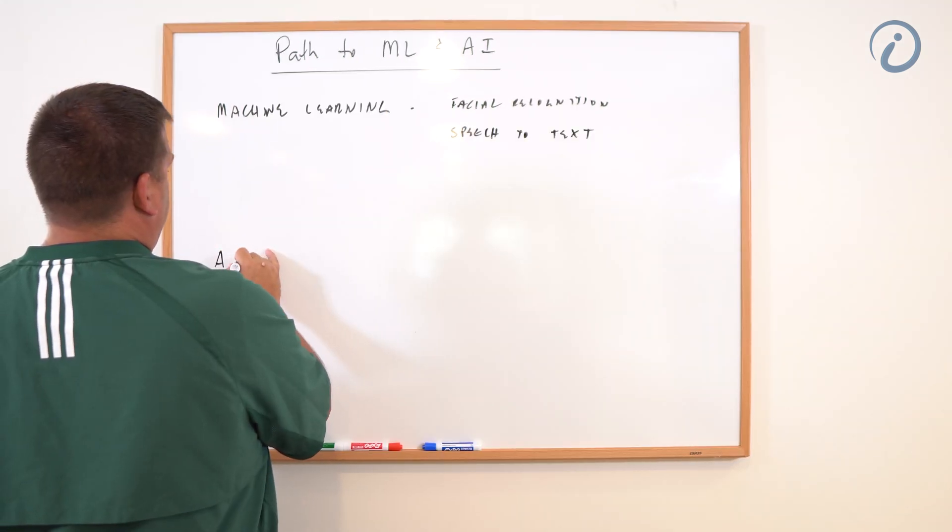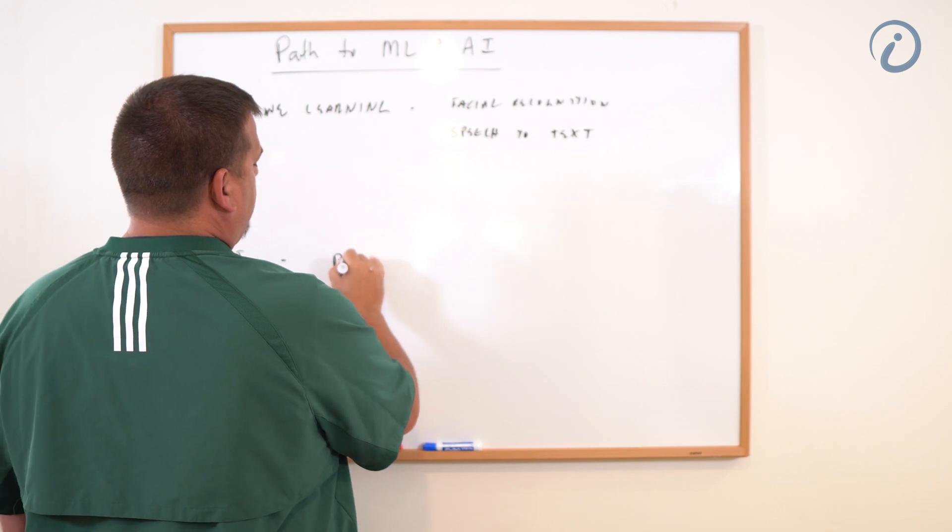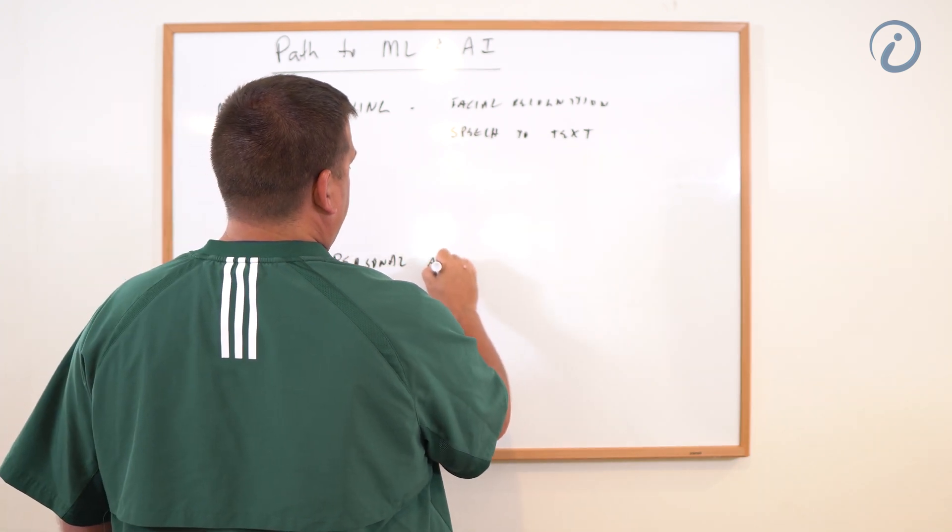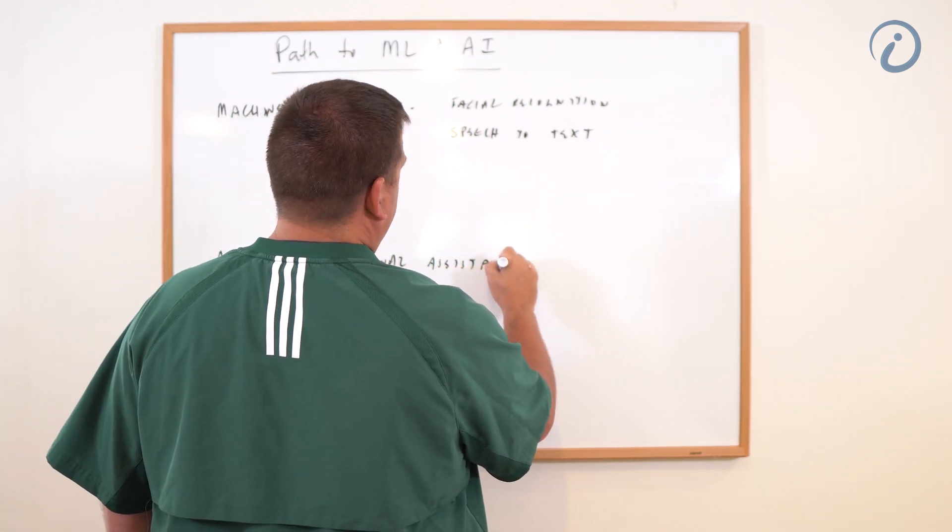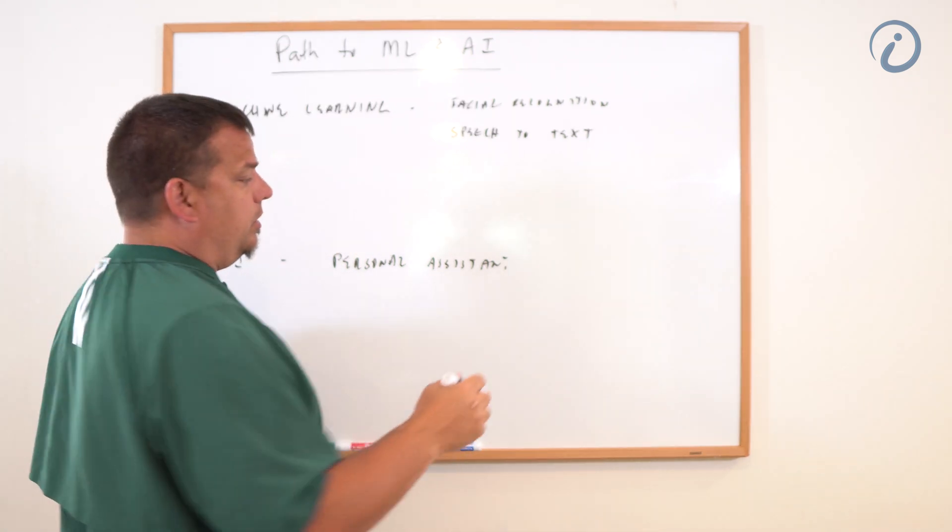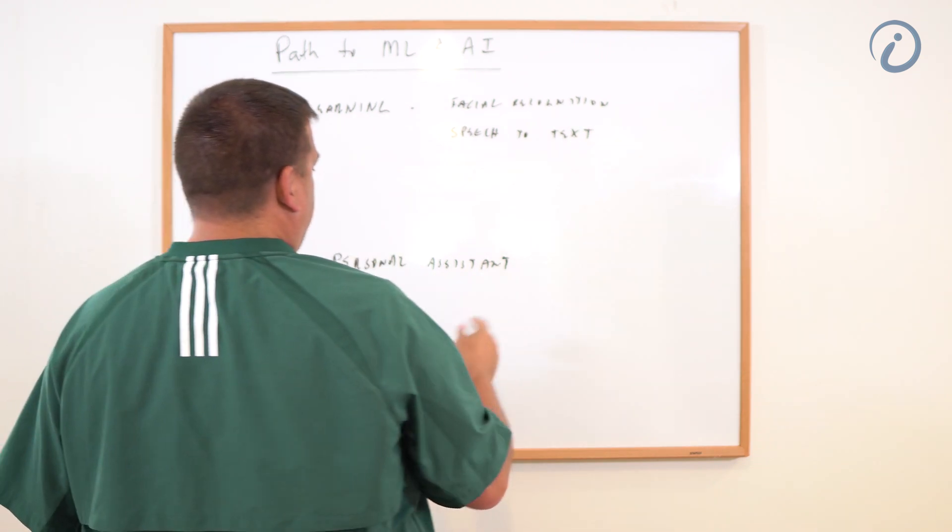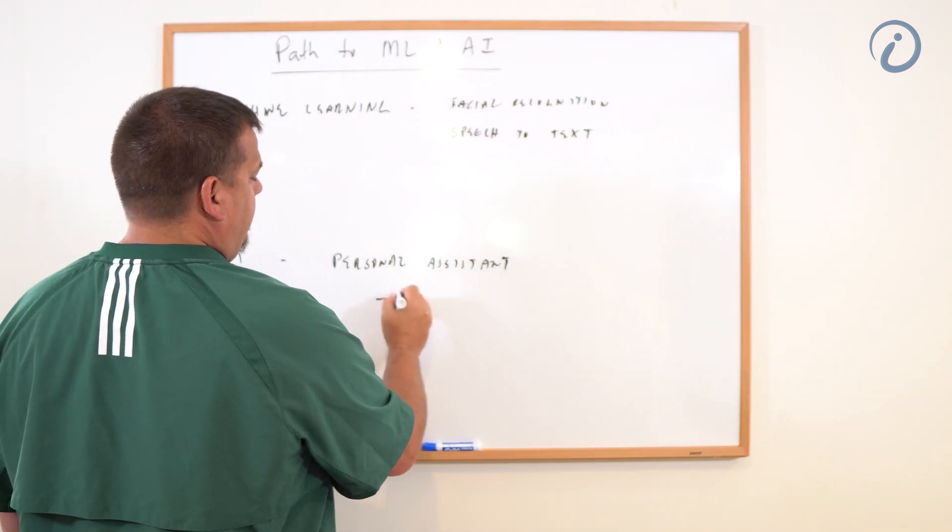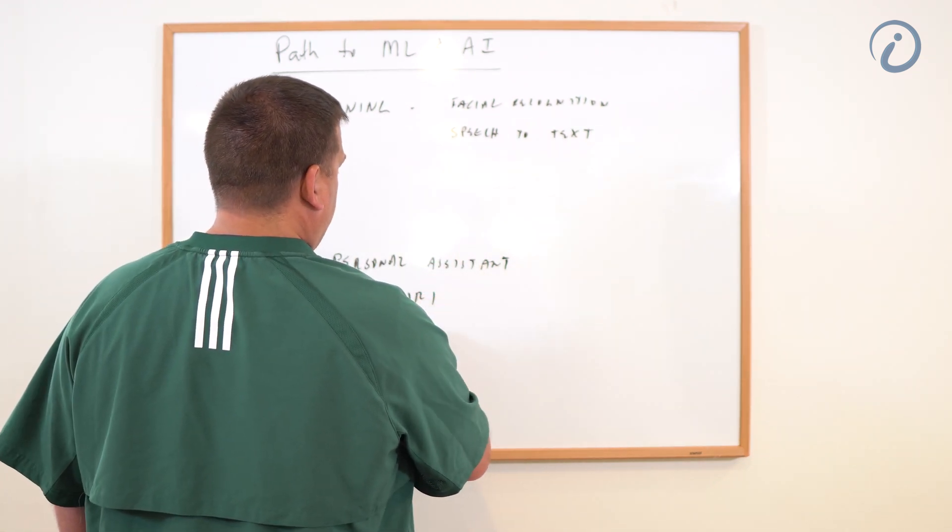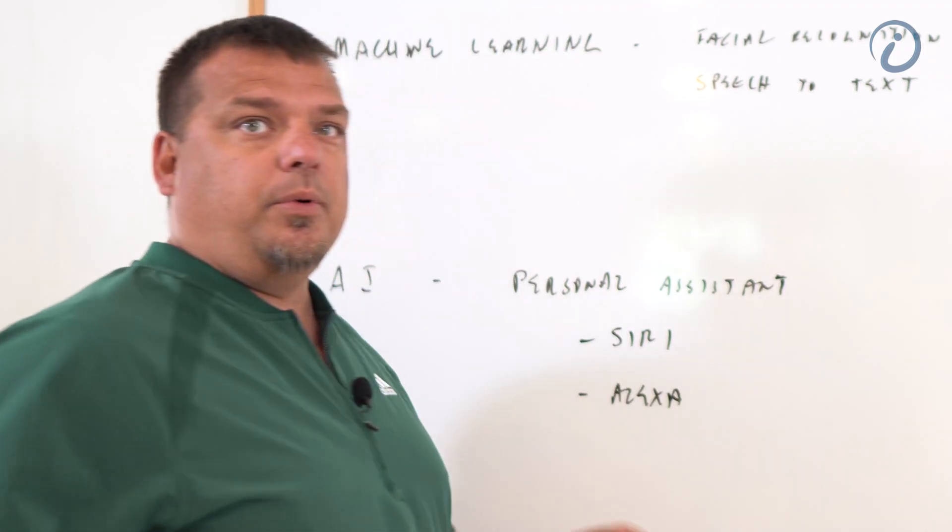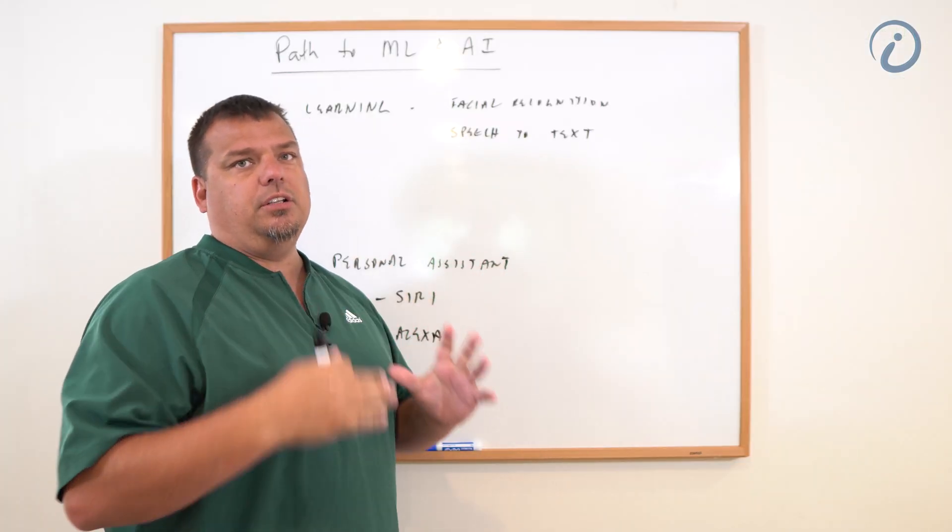And then examples of AI, let's do personal assistant. So let's say Siri. Well, we could do self-driving car would be perfect one, but I'm going to use personal assistant so that we can use both. So this would be Siri or Alexa. We want to drive home the difference between machine learning and AI.